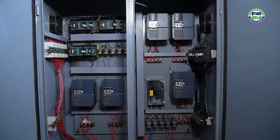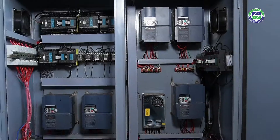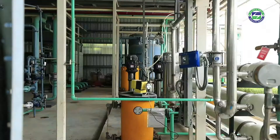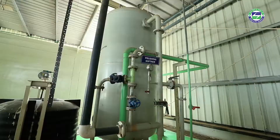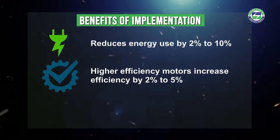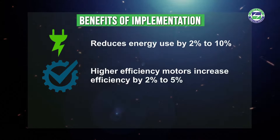Major benefits of replacing a conventional pump with an energy-efficient pump include: replacing a pump with a new efficient one reduces energy use by 2% to 10%. Higher efficiency motors have been shown to increase the efficiency of the pump system by 2% to 5%. Proper pump sizing can save 15% to 25% of electricity consumption for pumping.